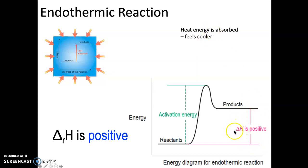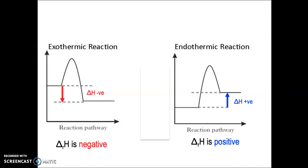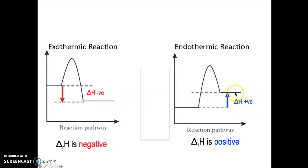Endothermic reactions have an enthalpy change — a delta H value — that is positive. Side by side: exothermic reactions release heat energy and have a negative delta H, while endothermic reactions have absorbed heat energy so their delta H will be positive.